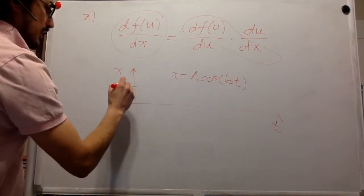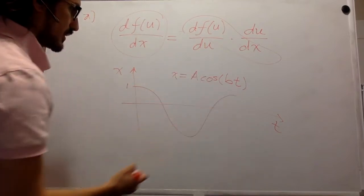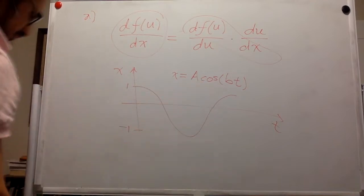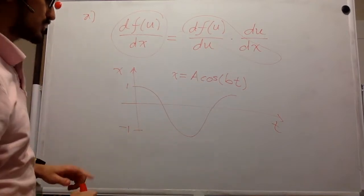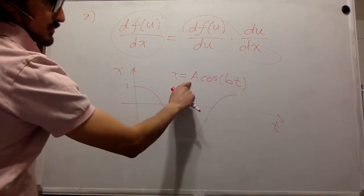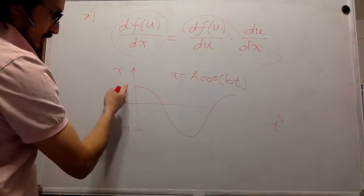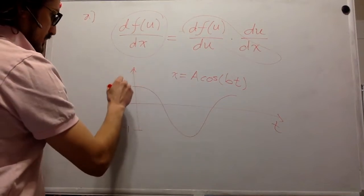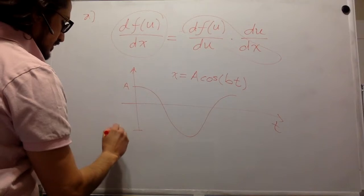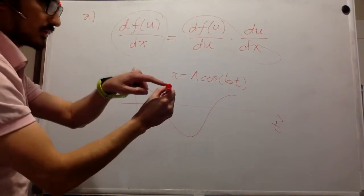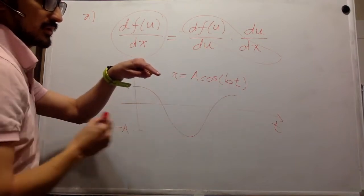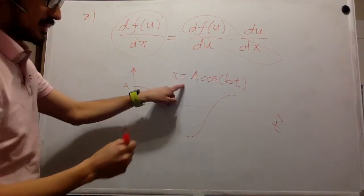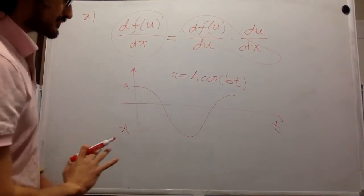So cosine starts at 1 and it looks like that. The minimum over here is minus 1. So this whole function, we're multiplying it times A. Since the range of the cosine is from negative 1 to 1, we're just going to multiply it, and the maximum value is going to be A and the minimum value is going to be minus A. So from here to here is the amplitude of this oscillation.